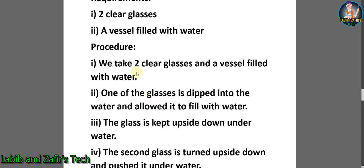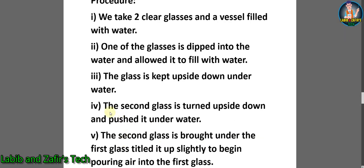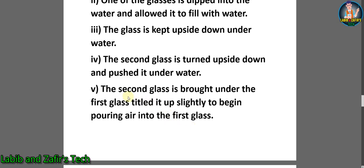Procedure: number one, we take two clear glasses and a vessel filled with water. Number two, one of the glasses is dipped into the water and allowed to fill with water. Number three, the glass is kept upside down under water. Number four, the second glass is turned upside down and pushed under water. Number five, the second glass is brought under the first glass, tilted up slightly to begin pouring air into the first glass.